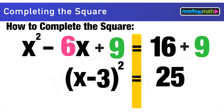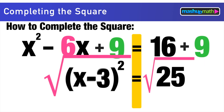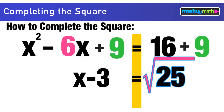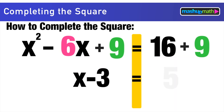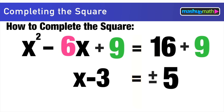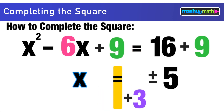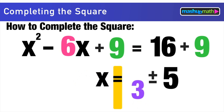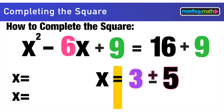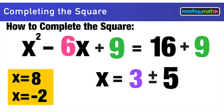To remove the exponent, we take the square root of both sides — they cancel on the left. The square root of 25 gives ±5. To isolate x, we add 3 to both sides. Then x = 3 + 5 = 8 is our first solution, and x = 3 - 5 = -2 is our second. Those are our two answers.